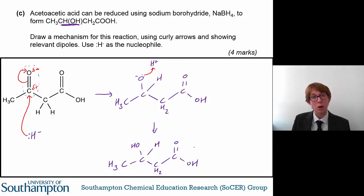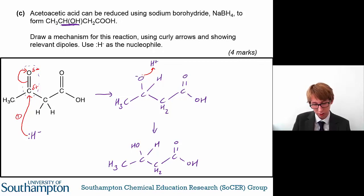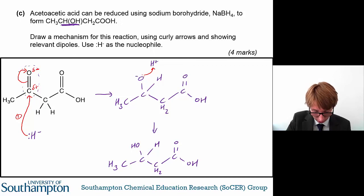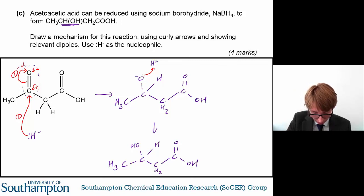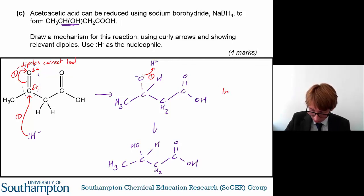There's your mechanism, and it's worth four marks. The first mark is for the curly arrow representing the movement of electrons from the hydride ion to the delta positive carbon. The second mark is for the next curly arrow, and you also need the dipoles correct. The third mark is for the curly arrow at the protonation step, and the fourth mark is for the correct intermediate structure.